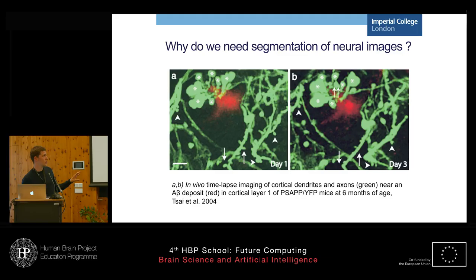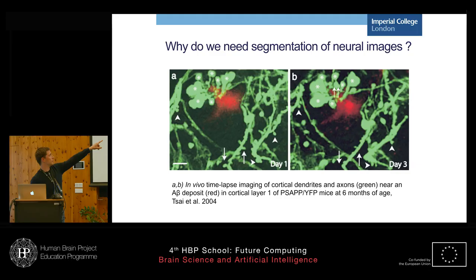The shape of a neuron contains a lot of information about its plasticity and about states of disease, such as Alzheimer's disease. This example shows that, for example, it causes the loss of spines and the apparition of varicosities — the big bulbs there.